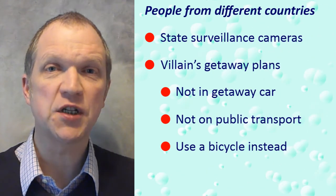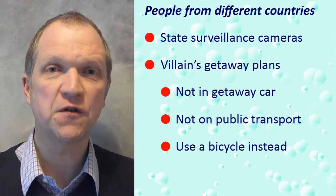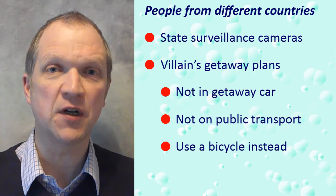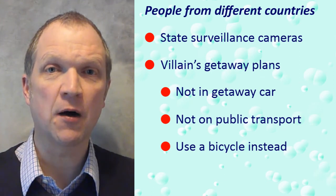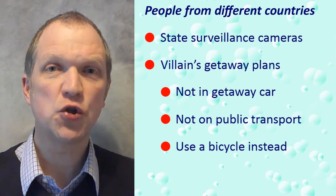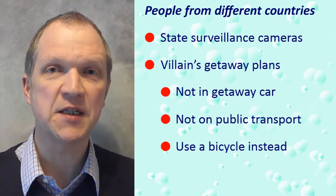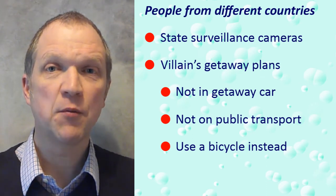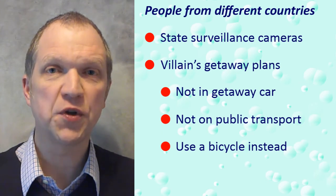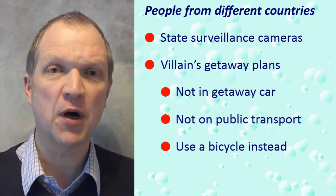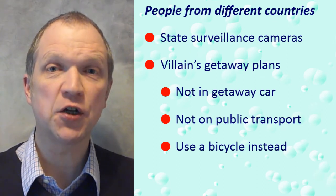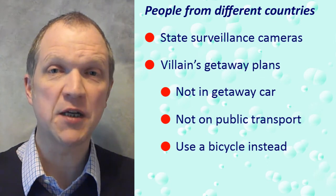Some countries have far more CCTV or surveillance cameras than others. This could affect the escape plans of your story's villain. For example, a villain in the UK wouldn't use a getaway car because CCTV cameras would track it via its number plate or license plate as it drove along the roads, particularly in cities. Nor would the villain use public transport because cameras would photograph our villain's face each time they stepped onto a bus or a train. Instead, our villain could use a bicycle. Perhaps they stole the bicycle too.